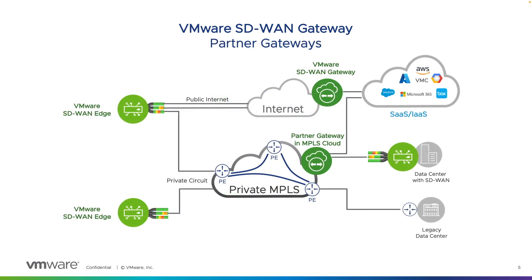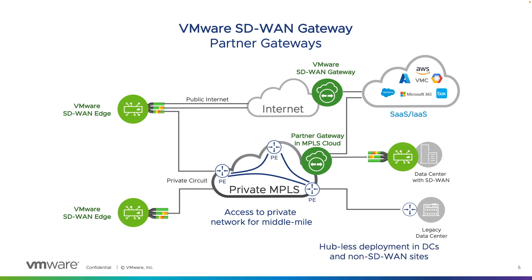Partner-hosted gateways expand the geo-availability of SD-WAN gateways worldwide, but also serve to enable access to private networks such as an MPLS backbone hosted by a service provider. The partner gateways provide superior last-mile connectivity to edges as an on-ramp to the MPLS backbone and can enable a hubless deployment topology, focusing the SD-WAN optimization to just the branch site locations.